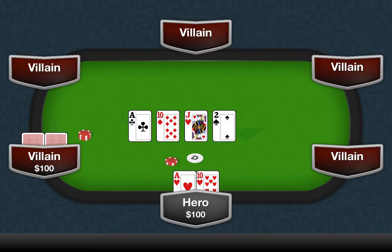Let's walk through an example together which shows how weighted hand ranges can be incredibly important in making the right decision. It's folded to us on the button, and we raise ace 10 of hearts. Our opponent, who's been a loose aggressive player so far, cold calls on the small blind. The big blind folds. The flop comes ace of clubs, 10 of diamonds, jack of hearts. Our opponent checks, we bet, and he check raises. We decide to call.